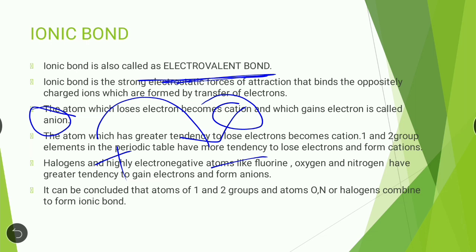Atoms with a greater tendency to lose electrons become cations. Group 1 and group 2 elements in the periodic table have a greater tendency to lose electrons and form cations — group 1 has only one electron in the outermost shell, and group 2 has only two. It is easy for them to lose these electrons and attain a stable octet configuration.